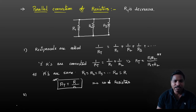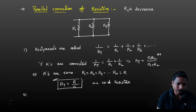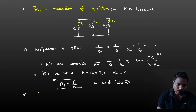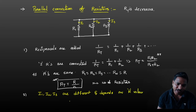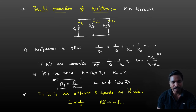The second point in parallel connection: in series the current is same, but here current is different. The current through R1 is I1, through R2 is I2, through R3 is I3 — the currents are different and depend on the resistance value. Current is inversely proportional to resistance: if resistance is more, then current is less.